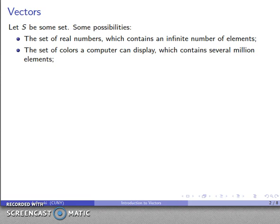We might take the set of trustworthy politicians. Now in order for us to actually have anything to talk about, we need to make sure that this set is actually non-empty, so this may not actually be a viable set. A vector is an ordered list, also known as a tuple, of the elements of S.